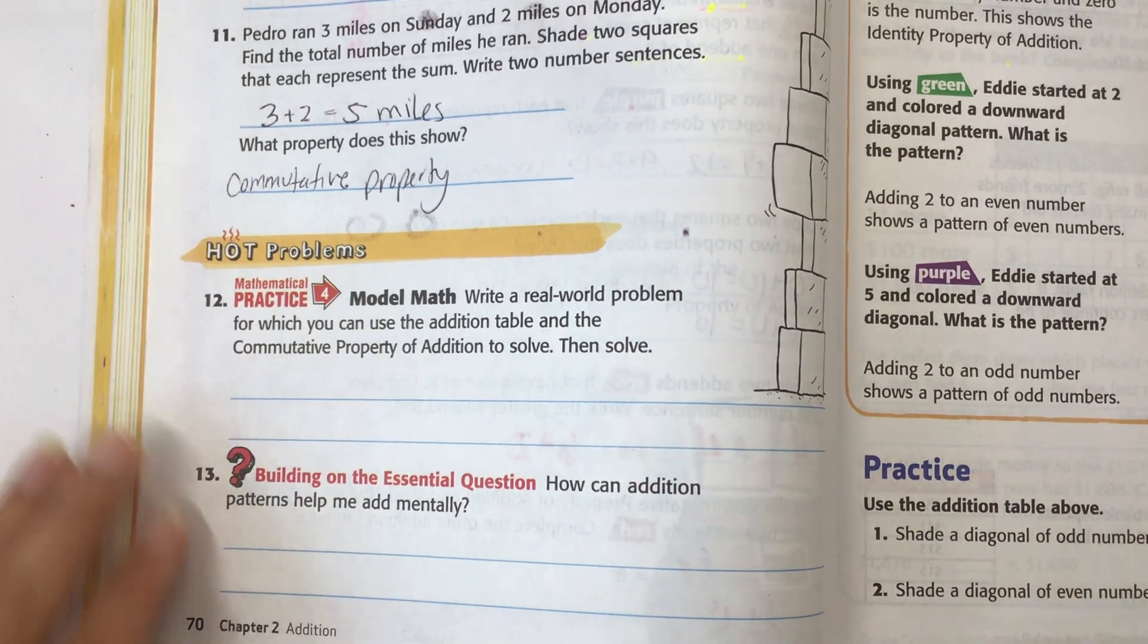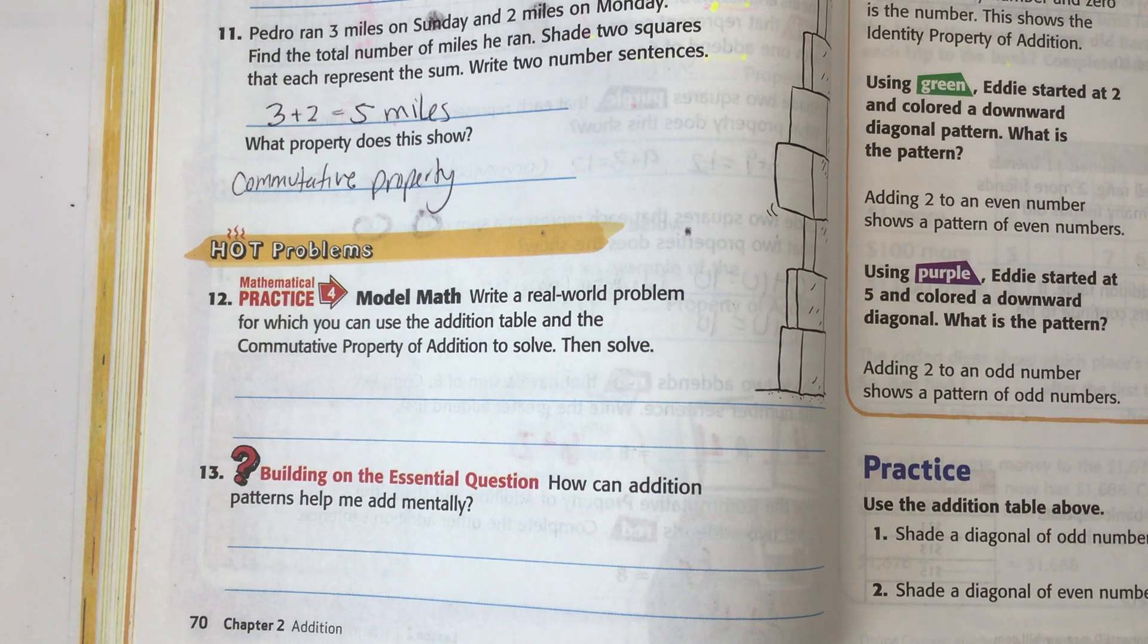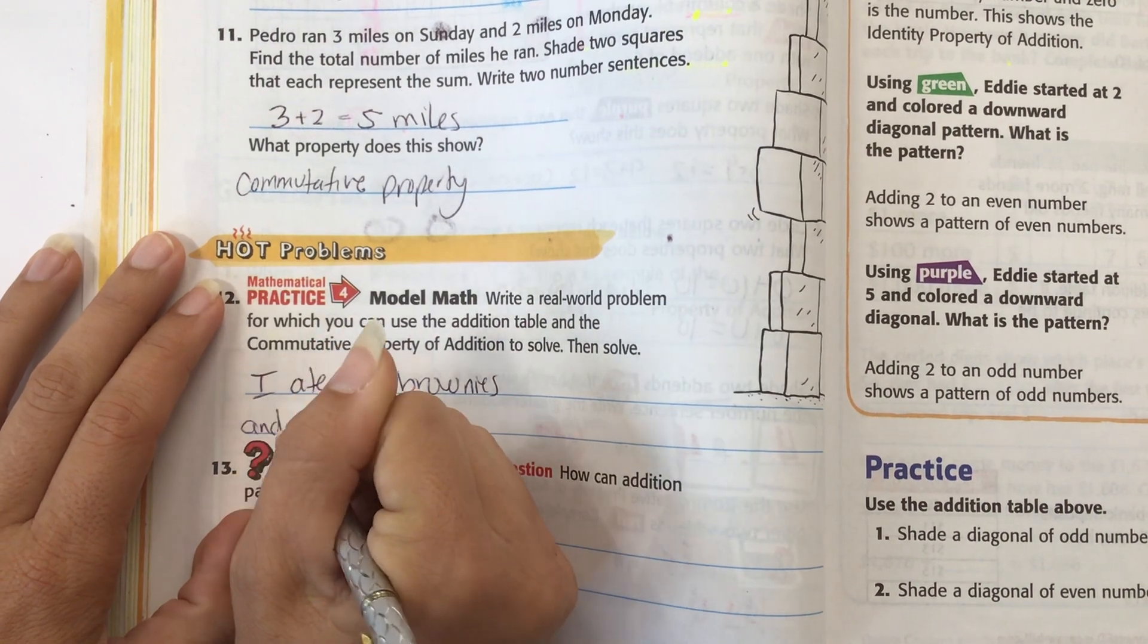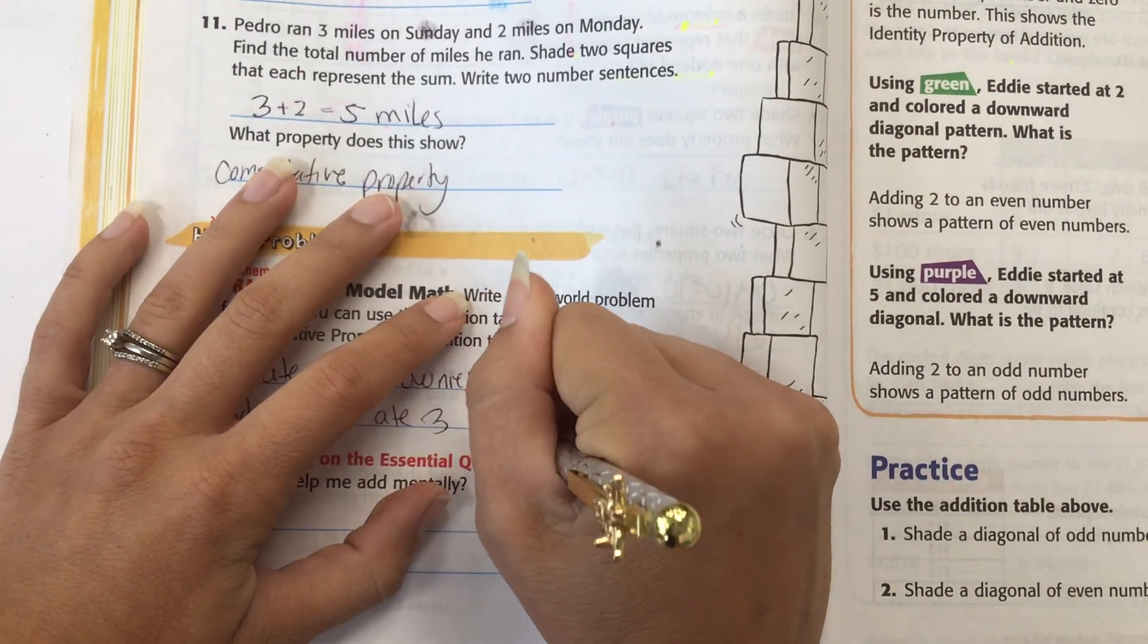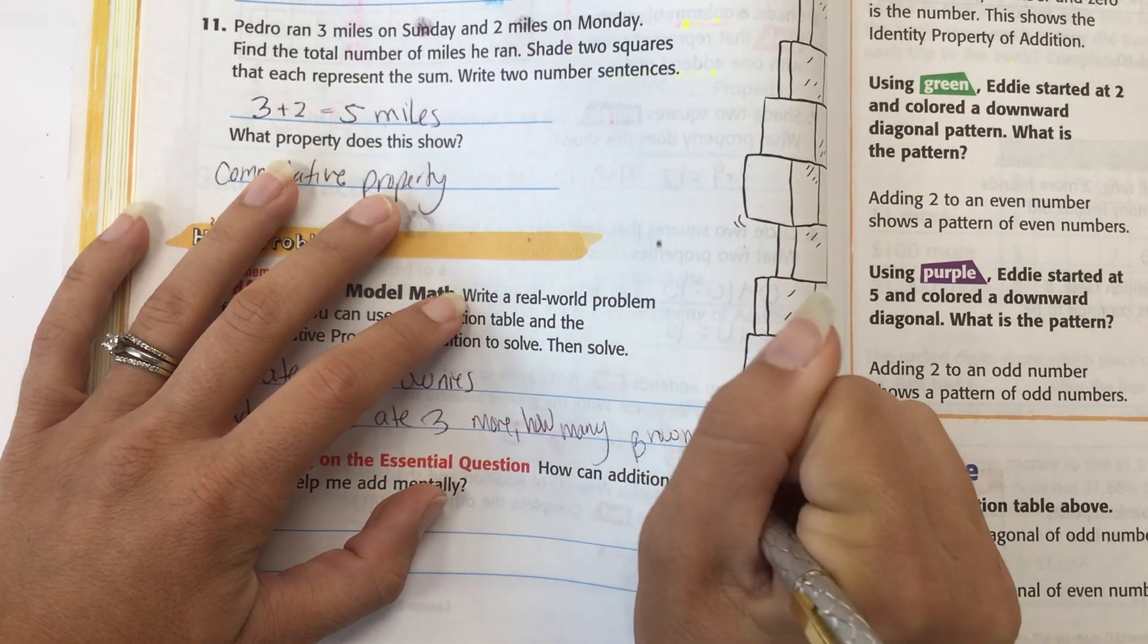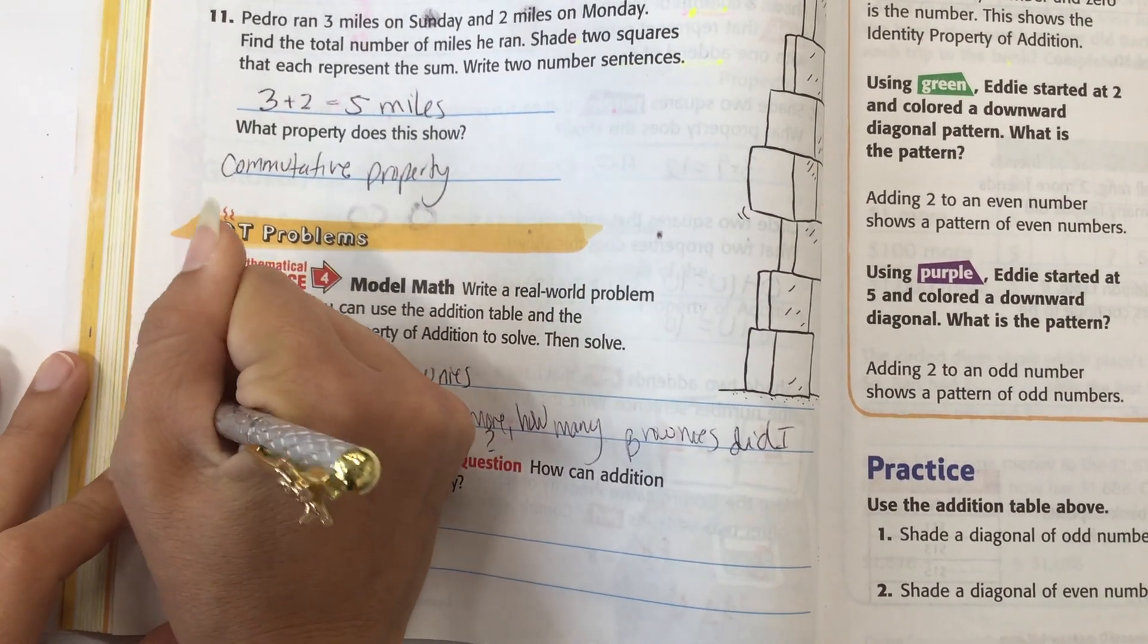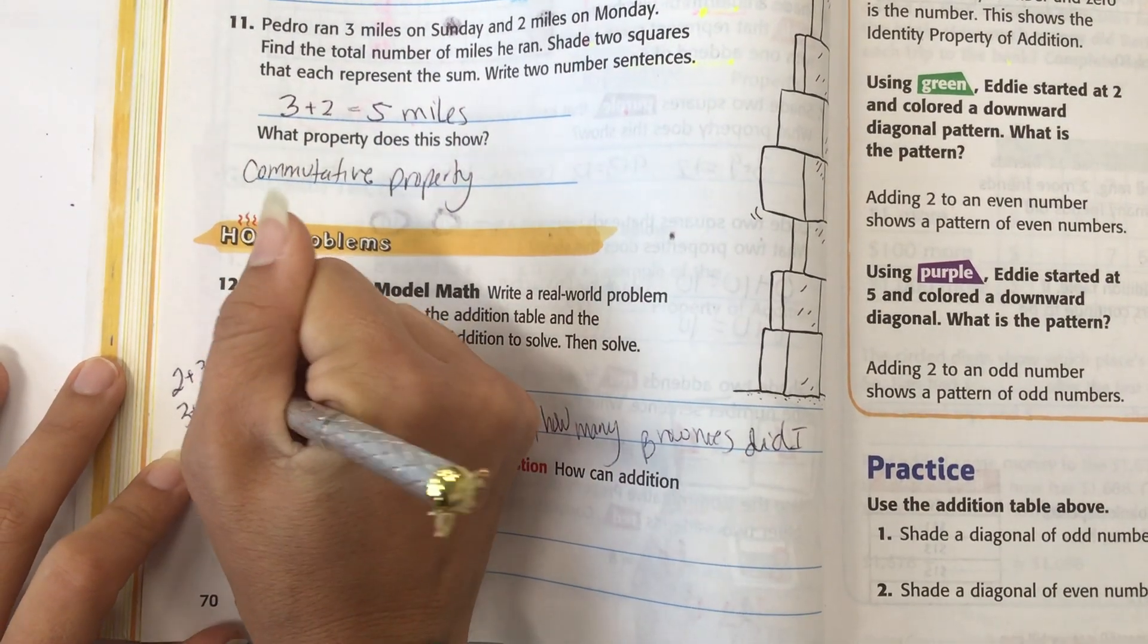Hot problems. Model math. Write a real world problem for which you can use the addition table and the commutative property of addition to solve. And then solve it. So, I ate two brownies, and then I ate three more. How many brownies did I eat in all? And my sentences would be two plus three or three plus two because we are going to use the commutative property. And total, I would have eaten five brownies.